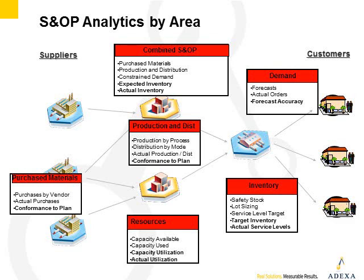The first area that we want to look at is the analytics around sales and operations planning. The analytics for S&OP can cover the entire supply chain, from demand all the way back through suppliers. Let's take a look at the different measures that we have in each area of the supply chain.